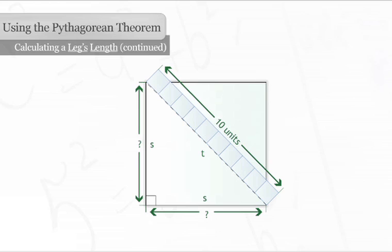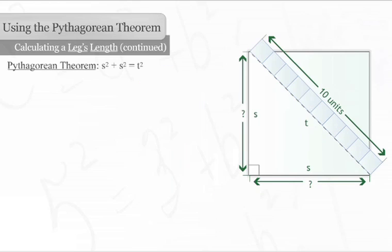Let us insert the length of T into the theorem. S squared plus S squared equals ten squared. It can also be noted as two S squared equals one hundred.